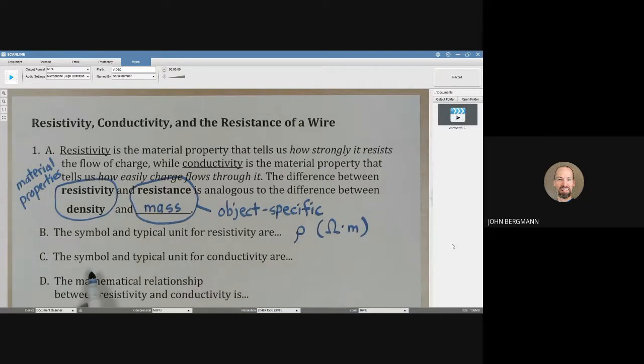And the symbol and typical unit for conductivity are sigma. You can see that some of these variables are being employed in other ways. Sigma also means the area charge density, doesn't it? But it is the same symbol for conductivity.